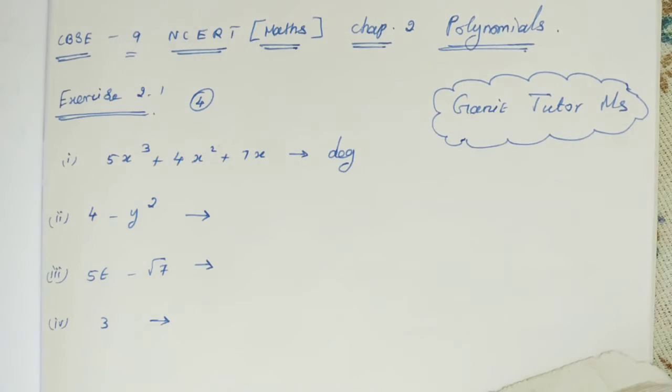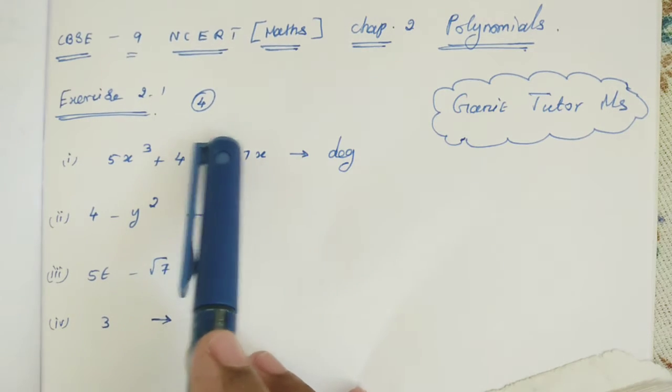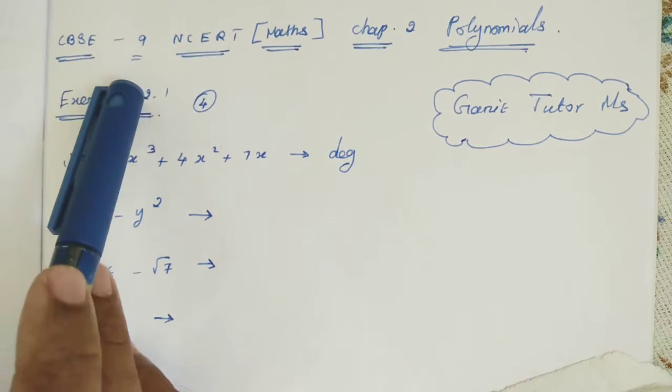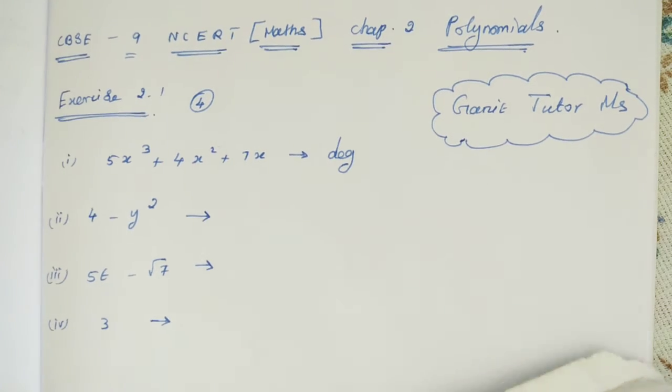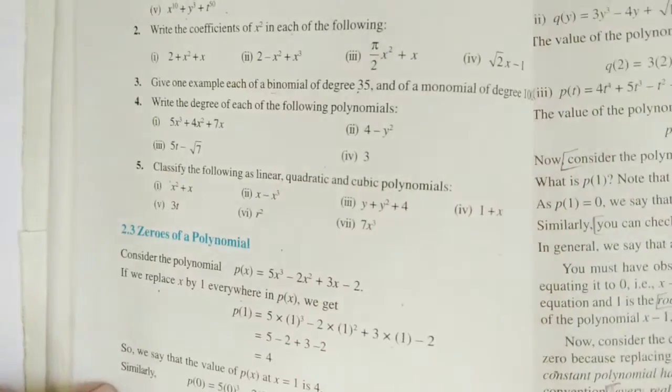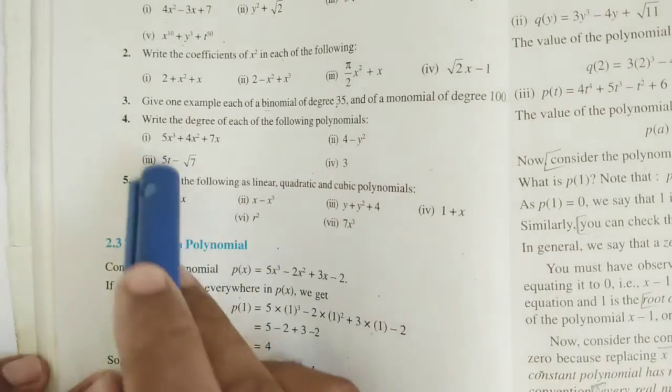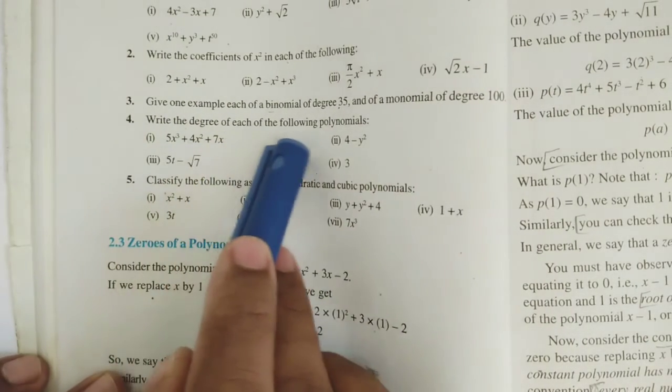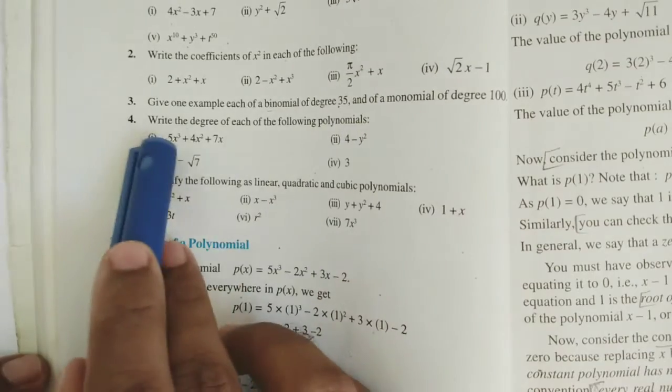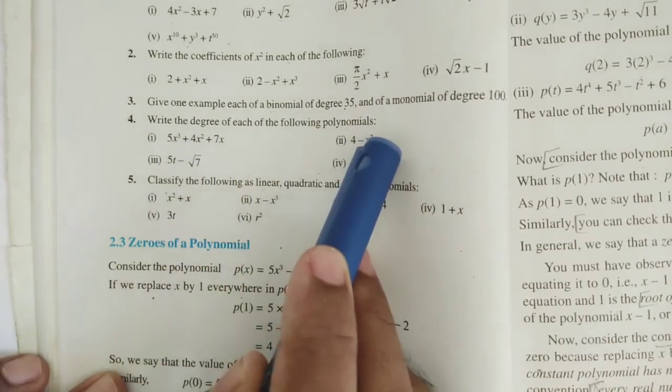In this video, I am going to solve the problem, Exercise 2.1, 4th problem, Chapter 2, 9th standard NCERT Maths. What they given in this problem - the problem is here: write the degree of each of the following polynomial.